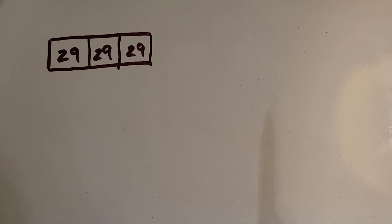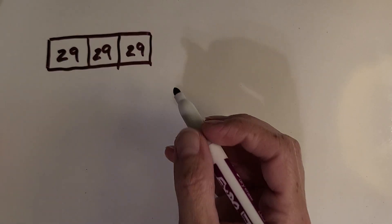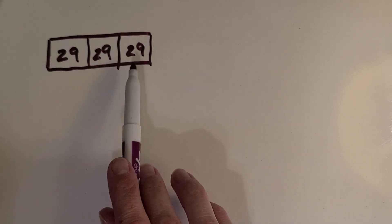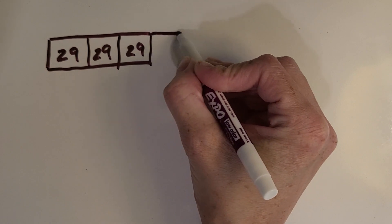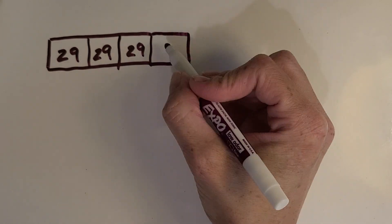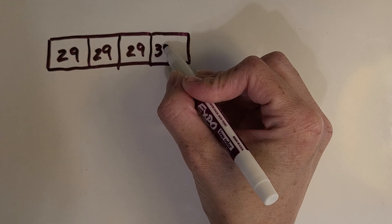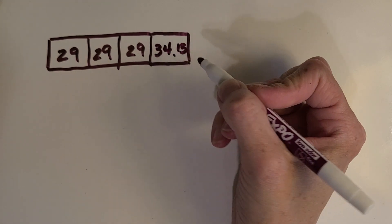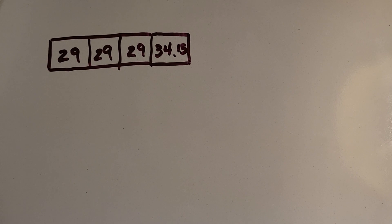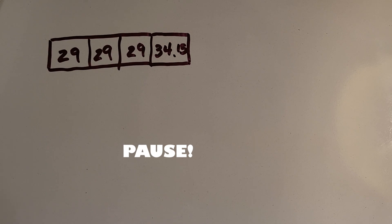And then we also had the hot dog stand, and that was $34.15. That's more than these, so I'm gonna make that section look a little bigger — not a ton bigger, but a little bit. $34.15. The question asks how much money did I spend on gas and hot dogs. I want you to pause the video and see if you can calculate my total, then we'll come back and check your work.